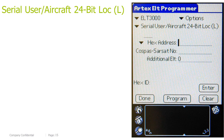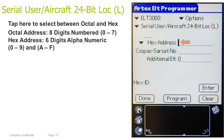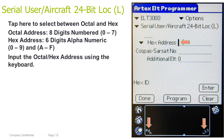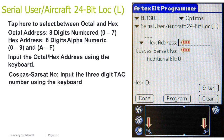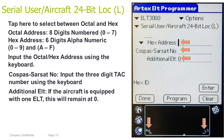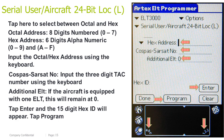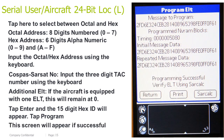Serial user, aircraft 24-bit address location. Tap here to select between octal and HEX. Octal address is 8 digits, numbers 0 through 7; HEX address is 6 digits, alphanumeric, 0 through 9 and A through F. Input the octal/HEX address using the keyboard. Input the 3-digit TAC number using the keyboard. If the aircraft is equipped with one ELT, the additional ELT will remain at 0; if the aircraft has additional ELTs, this number can be changed between 1 and 3. Tap Enter and the 15-digit HEX ID will appear. Tap Program. This screen will appear if successful.